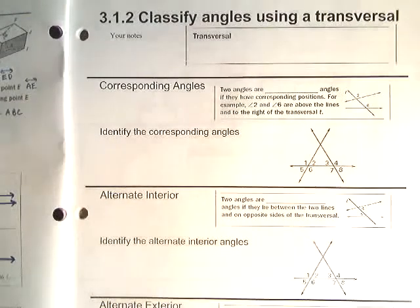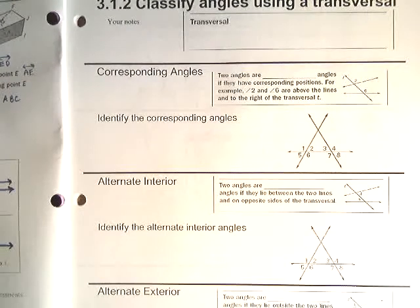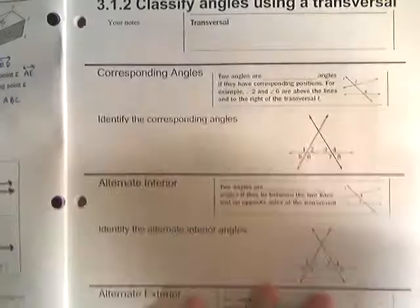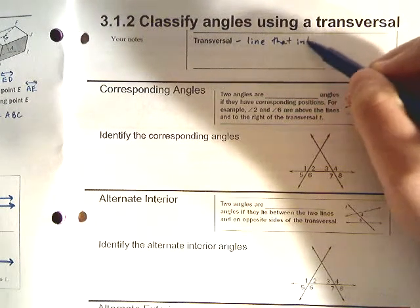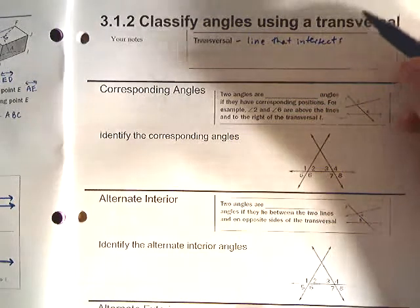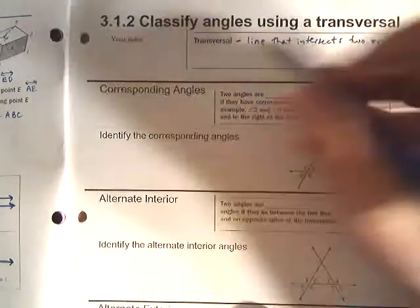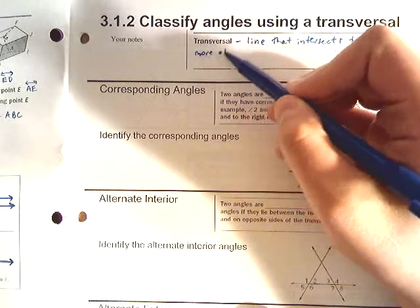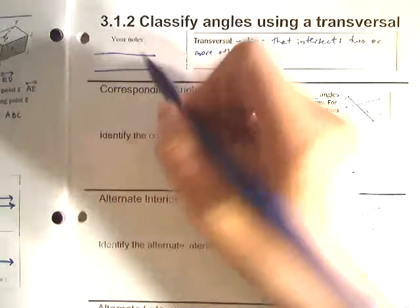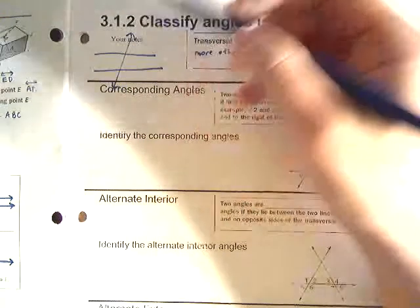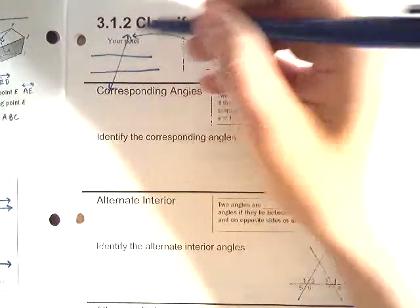In this section, we're going to be talking about a lot of different types of angles where you can compare two different angles in different positions, different intersections of lines, and they can be classified in certain ways. The only definition we need is of a transversal. A transversal is a line that intersects two or more other lines. For example, if you had a pair of parallel lines and then a third line that crosses through them, that third line would be the transversal line.